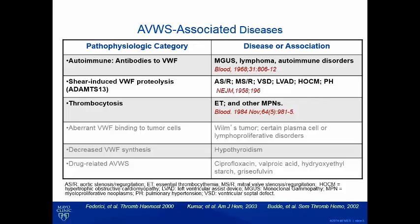Gradually, acquired cases are seen in our experience as not less common than congenital von Willebrand disease. They are usually very hard to diagnose. There are also scattered case reports regarding certain cancers, medications, or other medical conditions, but based on literature review and our own experience, they are exceedingly rare.